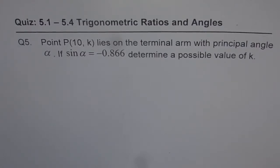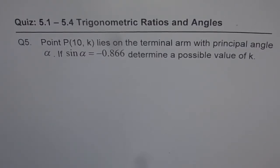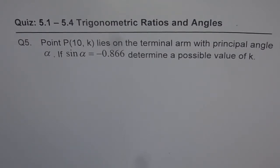Here is a thinking and application problem, question number 5. It says: point P lies on the terminal arm with principal angle alpha. If sin alpha equals negative 0.866, determine a possible value of k.